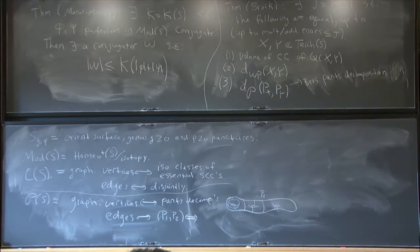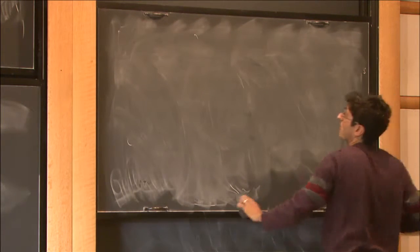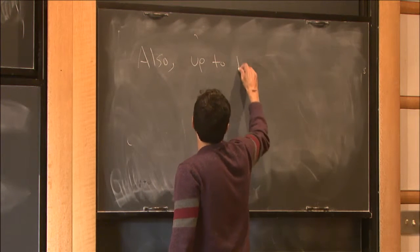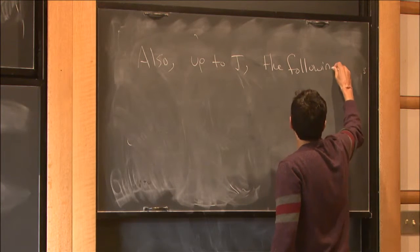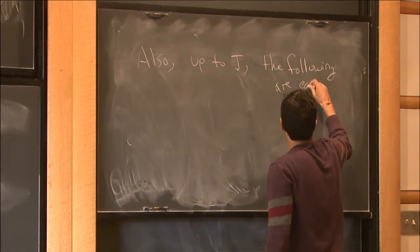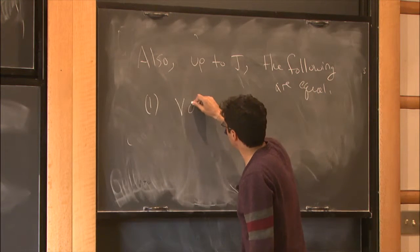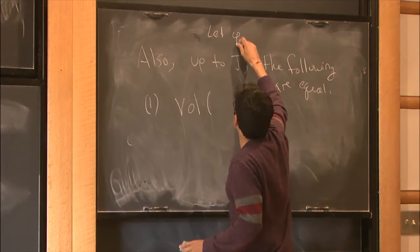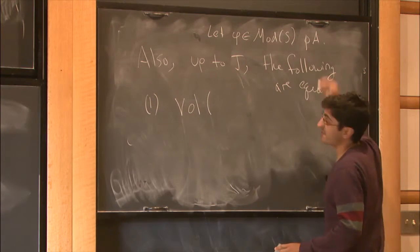There's a bit more to this theorem — it's really two separate theorems, but I want to say it all at once. Also, up to J, the following are equal. Let φ be a pseudo-Anosov mapping class.